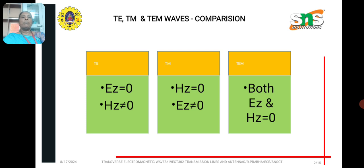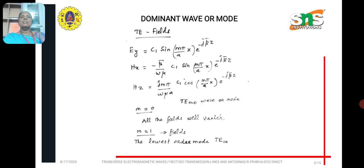then for TE wave, EZ is zero, but HZ not equal to zero. For TM wave, HZ is zero, but EZ not equal to zero. For TEM wave, both EZ and HZ are zero.